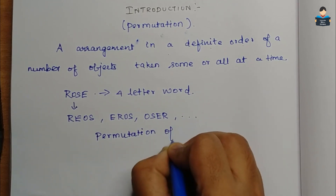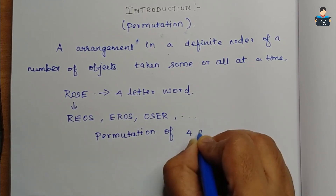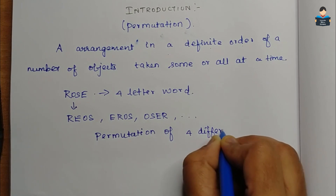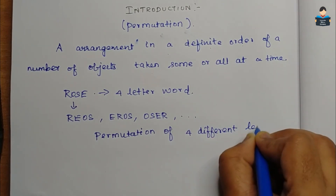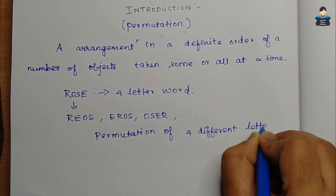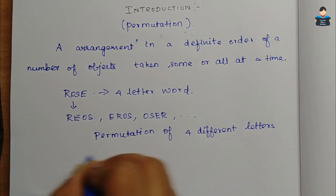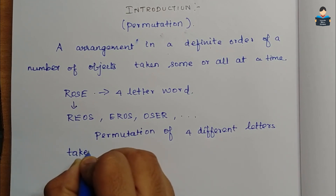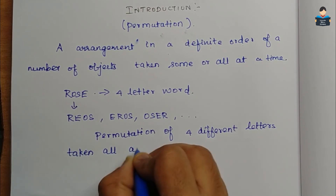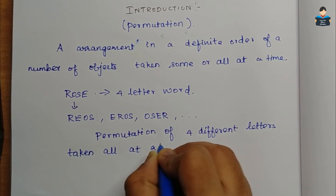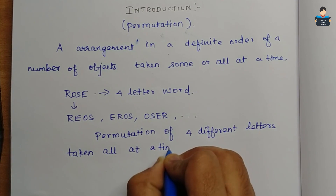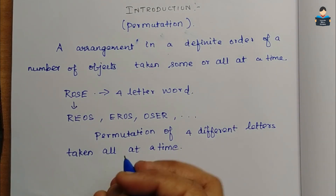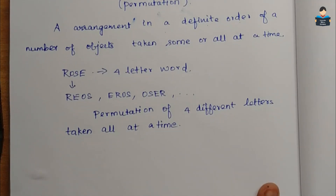Meaning we will arrange — say for example R-E-O-S, E-R-O-S — different ways we will write, with or without meaning, but we will write these four letters. So in this arrangement, one arrangement we will say permutation of four different letters taken all at a time.